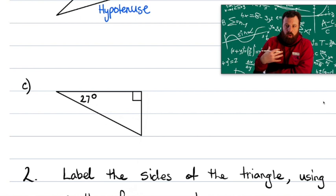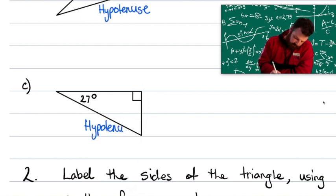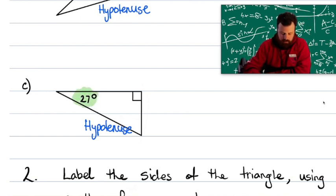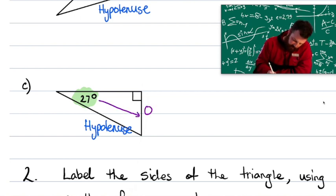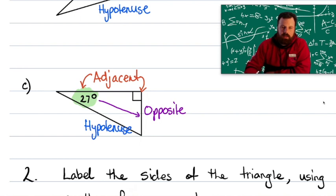Example C — all four steps again. Right angle, the other side is our hypotenuse. Our reference angle is 27 degrees. The opposite side to our reference angle is our opposite side. And the last remaining side is the adjacent side, which is next to the reference angle and next to the right angle.